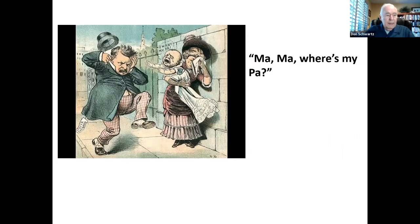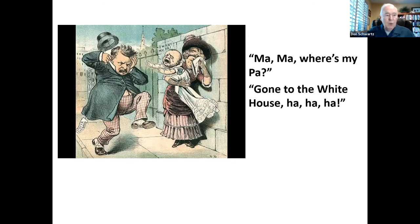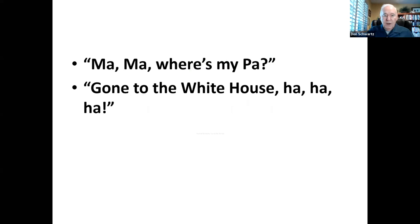So it was a very close election, but Cleveland ultimately won. In answer to the refrain 'Ma, Ma, where's my pa?' the victorious Democrats gloated: 'He's gone to the White House! Ha, ha, ha!' Other Democrats bellowed: 'Hooray for Maria! Hooray for the kid! I voted for Cleveland and I'm damn glad I did!'